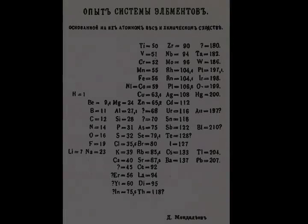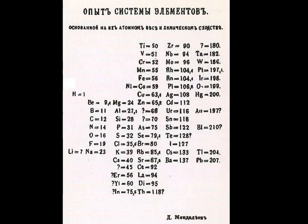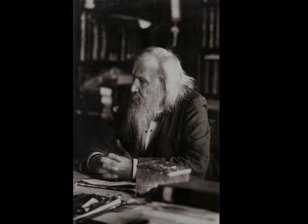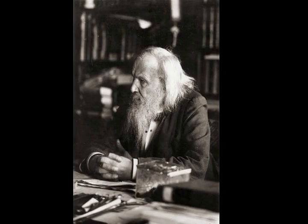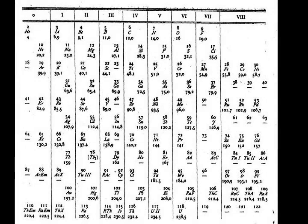Of the 94 natural elements, 80 are stable, 3 more undergo radioactive decay but so slowly that large quantities survive from the formation of the Earth, and 11 more decay quickly enough that their continued trace occurrence rests primarily on being constantly regenerated as intermediate products of the decay of thorium and uranium. The 83 elements that have survived from the formation of the Earth are called primordial.